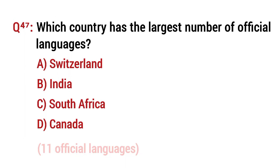Question number 47: Which country has the largest number of official languages? The right option is C: South Africa.